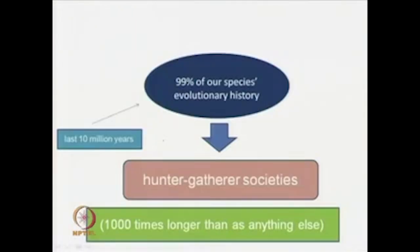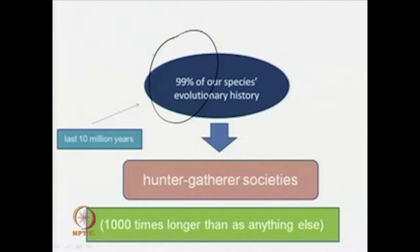This is an immensely important point. Tooby and Cosmides go on to say that 99 percent of our species' evolutionary history was spent in hunter-gatherer societies. So the mind that we possess today is the mind of the hunter-gatherer society. This is a thousand times longer than anything else.